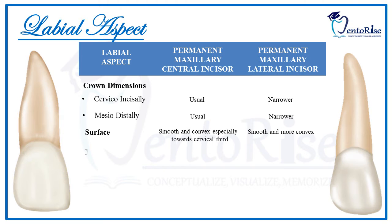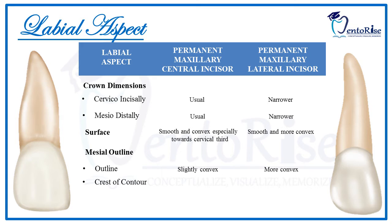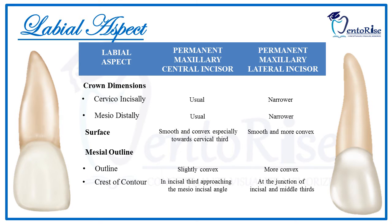Coming to the mesial outline, the mesial outline for a central incisor is slightly convex, while for the lateral incisor it is more convex. The crest of contour for a central incisor lies in the incisal third approaching the meso-incisal angle, while for the lateral incisor it is at the junction of the incisal and middle thirds. The meso-incisal angle for the central incisor is sharp, while for the lateral incisor it is rounded.